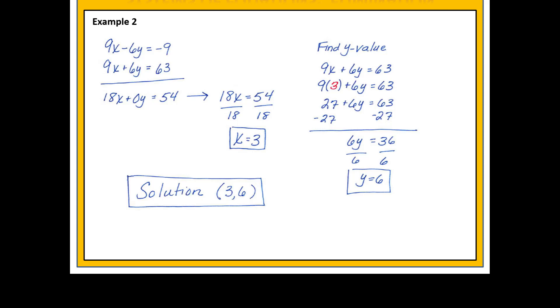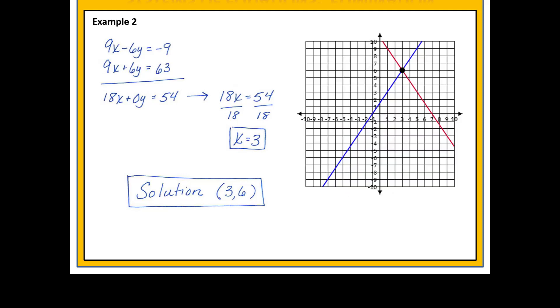These are the values of x and y that make both equations true at the same time, and that's the point on the graph where these two lines would intersect.